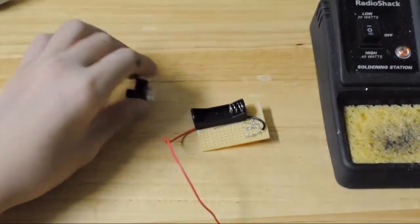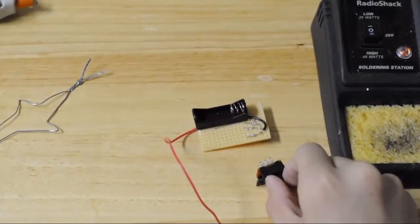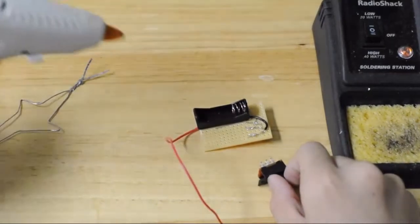After you've soldered the negative wire to the last leg of the transistor, all the transistor wiring should be complete. Next, take a switch and hot glue it below the battery holder.